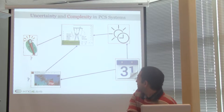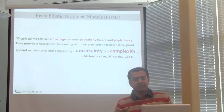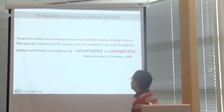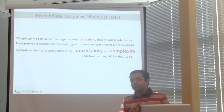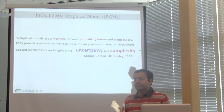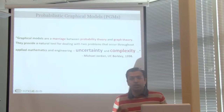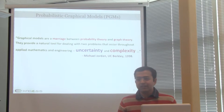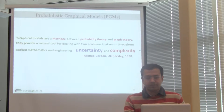Addressing these two things — uncertainty and complexity — probabilistic graphical models are a very good fit for this problem because they integrate probability theory and graph theory. Graph theory is to deal with complexity: there may be multiple pieces you want to study and you don't know how things are connected, so you have a graph to capture your intuition of connections. Probability theory is a calculus to deal with uncertainty: if you're not sure about certain events, you can capture it using probability theory. So probabilistic graphical models are a good fit for the problem of PCS systems.